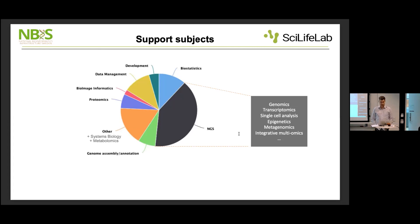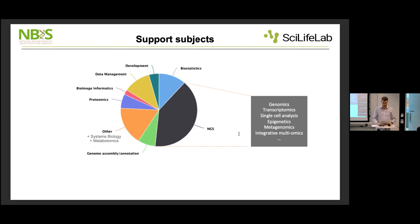This is a rough classification of types of projects that we have been supporting in the past. There's a lot of overlap — if you're working with next generation sequencing, which is a large part, some of it will also be related to biostatistics. Or it could be several types of omics data, both NGS and proteomics for example. Once you generate the data, there's also a large portion of data management — how to work with and submit the data and make repositories. So it's a general view, but quite diverse.